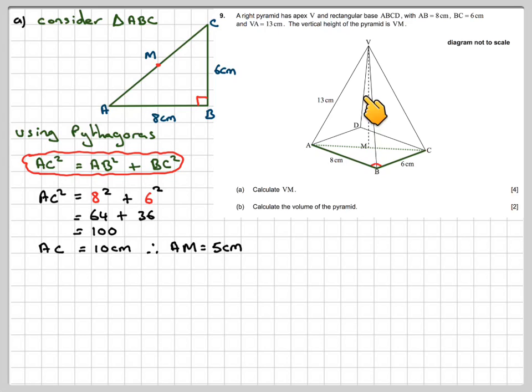In order to calculate the height, this height here, I'm now going to have to consider that triangle, which is triangle AMV, which is also right angled. I now know that this length here is 5, and this length here is 13. I need to calculate a smaller side on the right angled triangle, so therefore it's going to be 13 squared minus 5 squared.